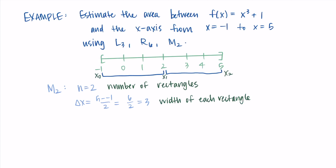With midpoint Riemann sums we need to find the midpoint of each rectangle. I just average the two endpoints. For the first rectangle: (-1 + 2)/2 = 1/2. Looking at the number line, that's halfway between them — makes sense. For the second rectangle: (2 + 5)/2 = 7/2 = 3.5, which also lines up with our picture.